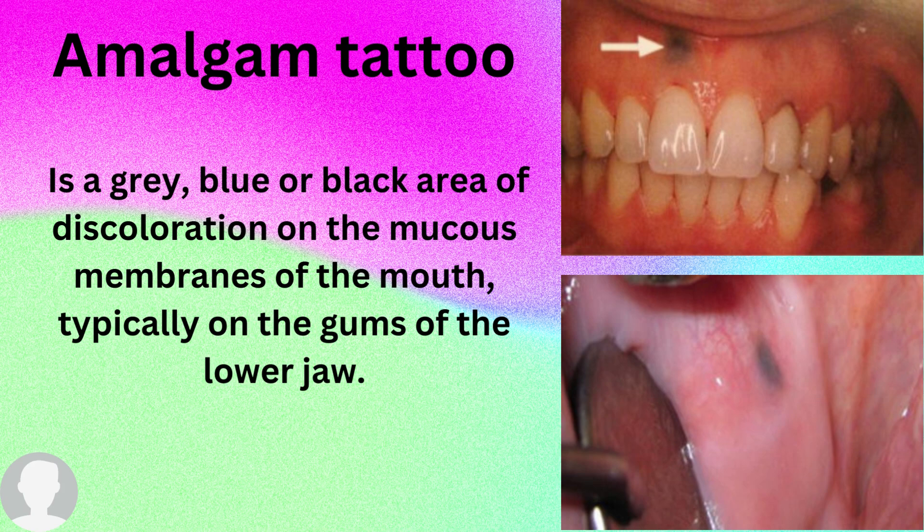It is defined as a gray, blue, or black area of discoloration on the mucous membrane of the mouth — typically on the gums, as you can see in the picture, whether in the upper jaw or lower jaw.